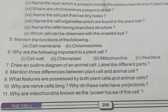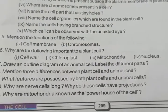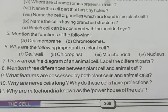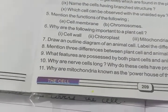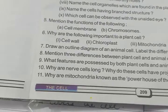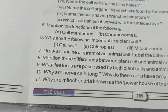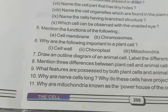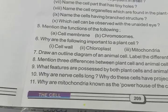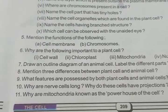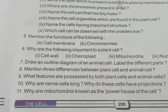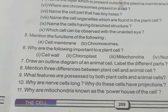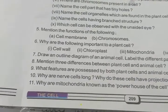Why are nerve cells long? Why do they have projections? I had shown you in the presentation that every cell's shape depends on what function it performs. Nerve cells' job is to carry messages from the brain to the entire body and back, so their shape is long like a wire with fiber-like branches so they can spread easily throughout the body. Why are mitochondria known as the powerhouse of the cell? Mitochondria converts glucose into energy and provides the cell with the power to function — that is why it is called the powerhouse of the cell.